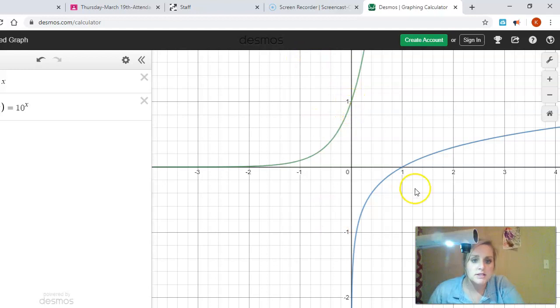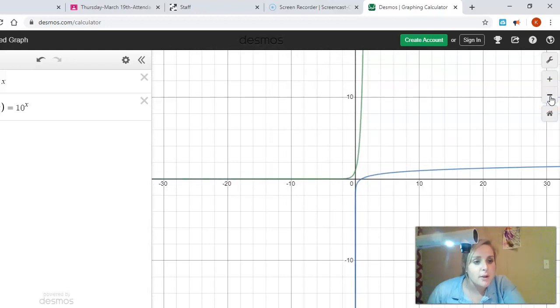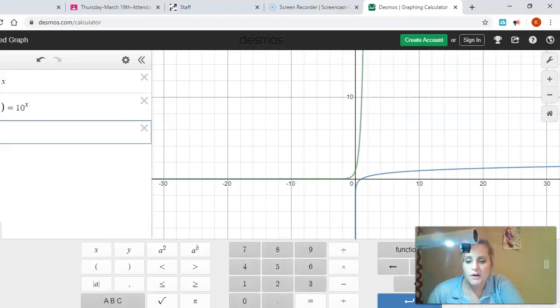We talked about this in class before we left for the coronavirus that these are going to be inverses of one another. You can see here that this is at zero one and this one is at one zero. They are inverses of each other, which means they are reflected over the linear parent function.